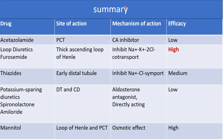Summary of all diuretics: Acetazolamide acts on the proximal convoluted tubule by inhibiting carbonic anhydrase enzyme — efficacy is low. Loop diuretic furosemide acts on the thick ascending limb of the loop of Henle by inhibiting the sodium-potassium-2-chloride co-transporter — efficacy is high. Thiazide acts at the early distal tubule by inhibiting the sodium-chloride symporter — efficacy is medium. Potassium-sparing diuretics (spironolactone and amiloride) act on the distal convoluted tubule and collecting duct via aldosterone antagonism and direct sodium channel blockade — efficacy is low. Mannitol acts on the loop of Henle and proximal convoluted tubule as an osmotic diuretic — efficacy is high.